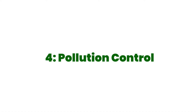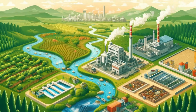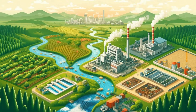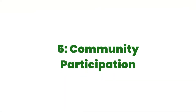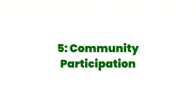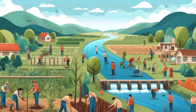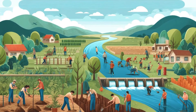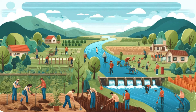Pollution control — implementing measures to control agricultural runoff, industrial discharge, and urban waste helps maintain water quality. Community participation — involving local communities in watershed management activities ensures sustainable practices and better upkeep of the watershed.